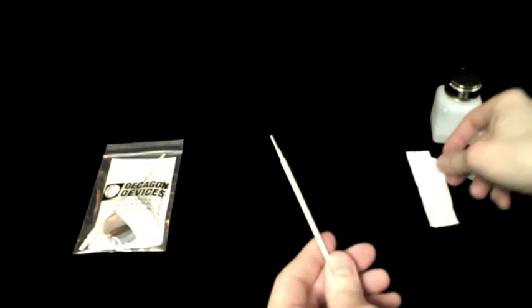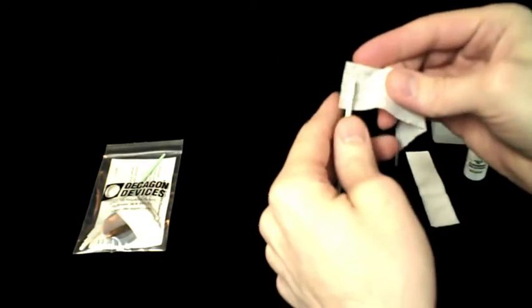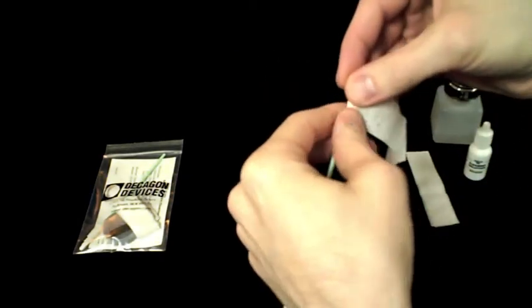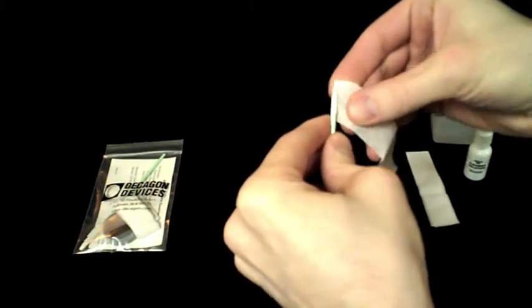Next, wrap a new kimwipe around the end of the thin plastic rod from the cleaning kit and moisten it with Decagon cleaning solution.